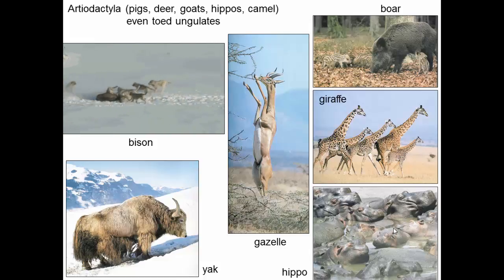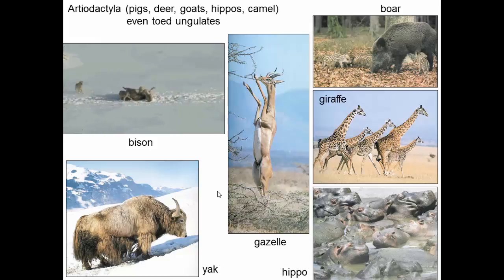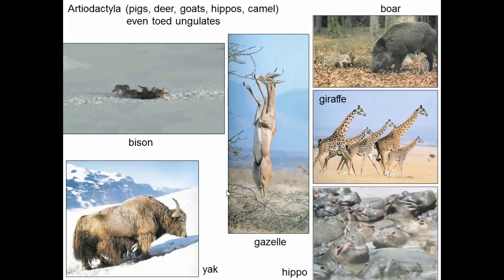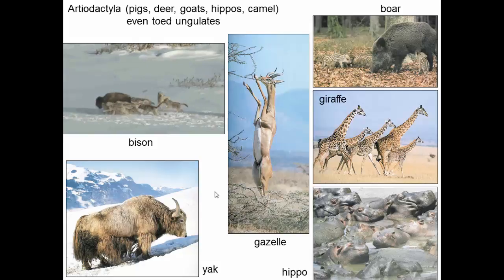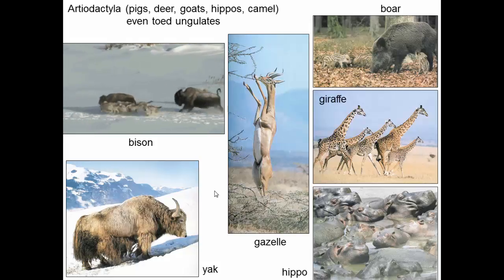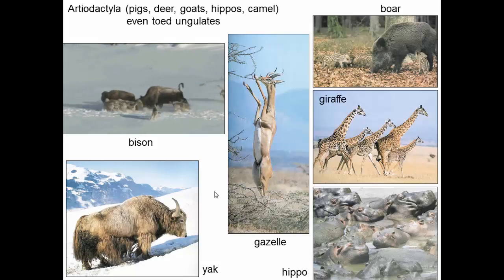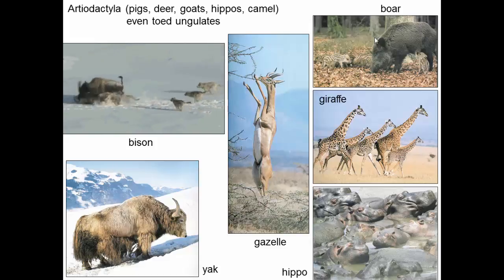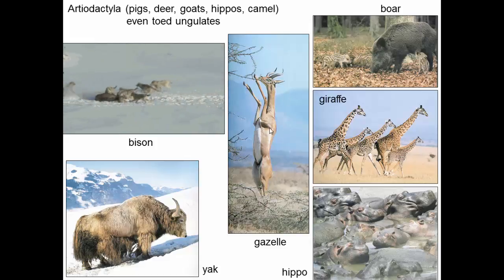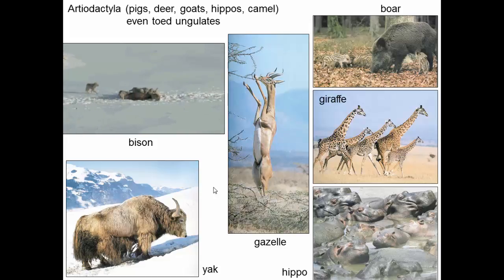Hippos seem to be the closest relatives of whales, which isn't entirely surprising because hippos are big, fat, and live in the water. Interestingly, artiodactyls are more closely related to whales than they are to perissodactyls — horses and rhinos — which you might have expected to be closer relatives, since deer look a lot like horses. But that's not how the history of life went.